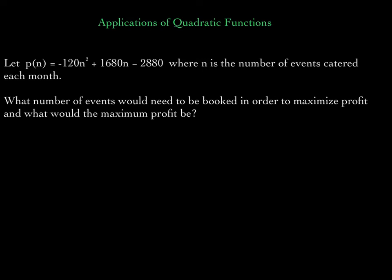We've been studying quadratic functions. In this short lesson, I would like to look at a few applications of quadratic functions. Let the function P of n equal negative 120n squared plus 1680n minus 2880, where n is the number of events catered each month.